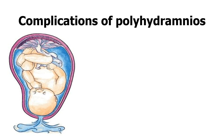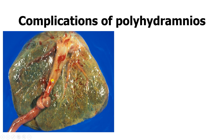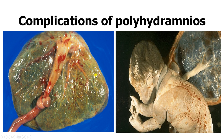The complications of polyhydramnios include premature rupture of membranes and cord prolapse, where the umbilical cord prolapses into the vaginal canal, predisposing the fetus to perinatal asphyxia — essentially suffocation due to compression of the umbilical cord, which is the primary supply of oxygen to the fetus. There is also the true knot of the umbilical cord, where the cord forms a true knot cutting off oxygen supply to the brain. Then there is the nuchal cord, where the umbilical cord wraps around the neck, also contributing to perinatal asphyxiation.